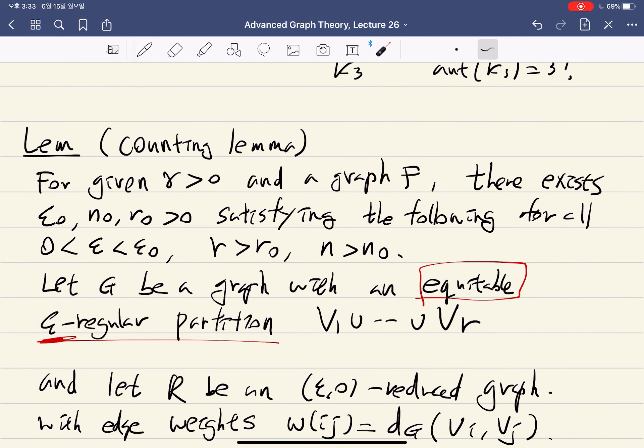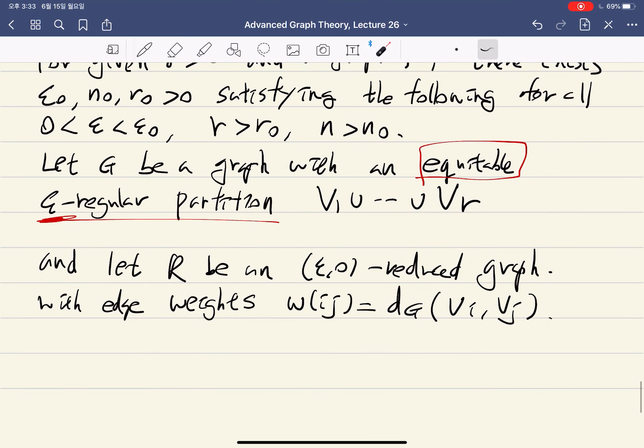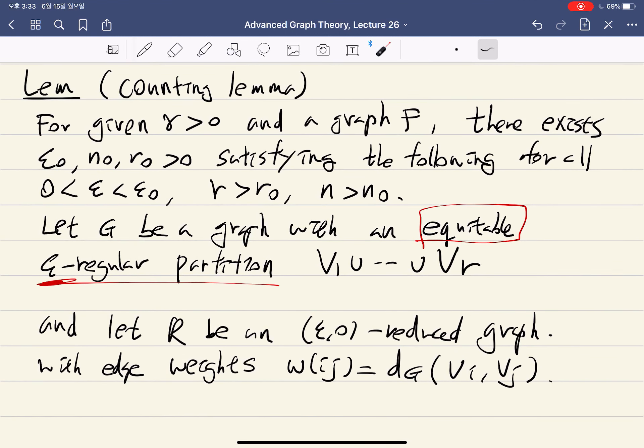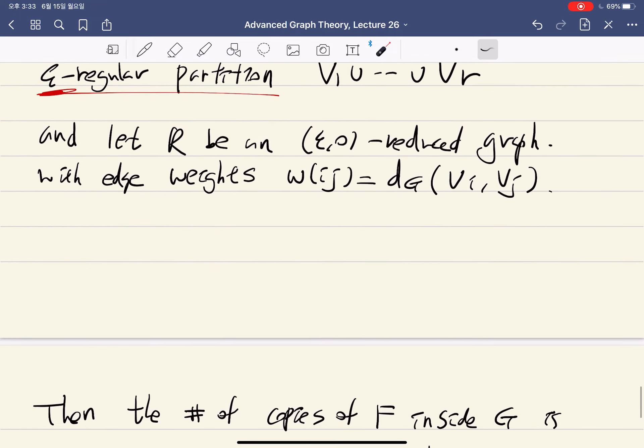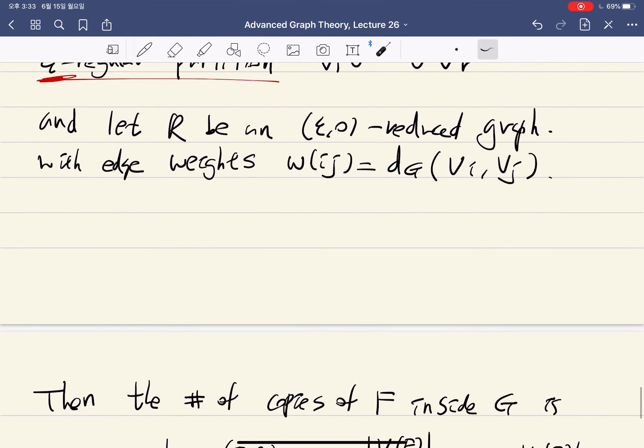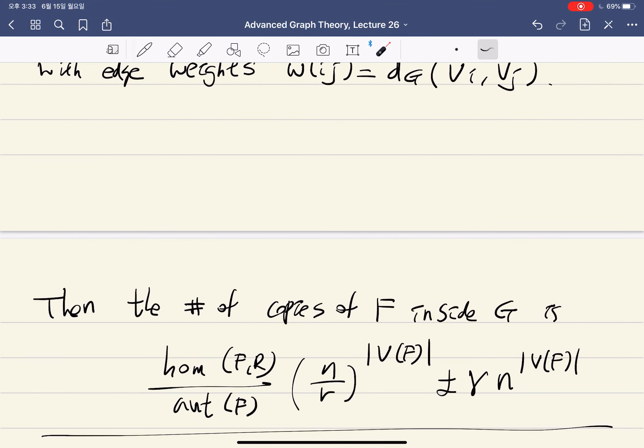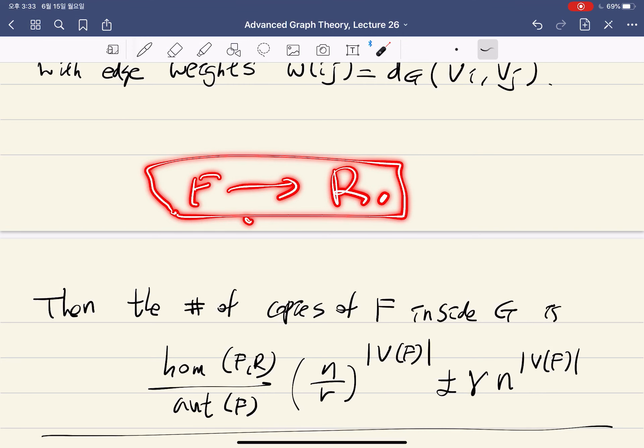The counting lemma and removal lemma proofs are not so much different from the triangle removal lemma but with additional computation. Again, you can imagine that for every choice of embedding F into R, for every homomorphism, it's similar to the triangle removal lemma.